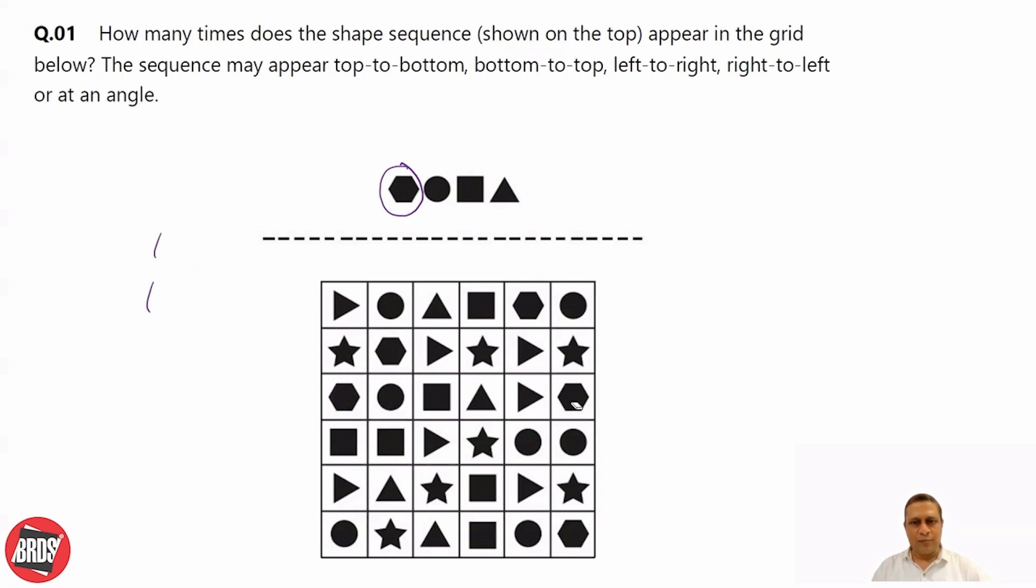Hexagon, then we move further. Hexagon, circle, square, triangle - we don't have. Circle, square, triangle - yes, this direction we have it. So we have one more.